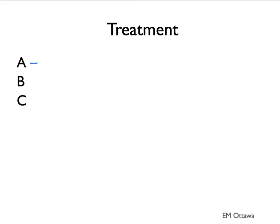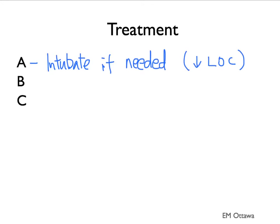The general treatment for any patient in the emergency department goes back to ABC. If the patient has a decreased level of consciousness, they need an airway — we might have to intubate the patient first. Oxygen should be given to the patient who is hypoxic. For circulation, IV fluids should be given, and we will add vasopressors if the patient is persistently hypotensive.